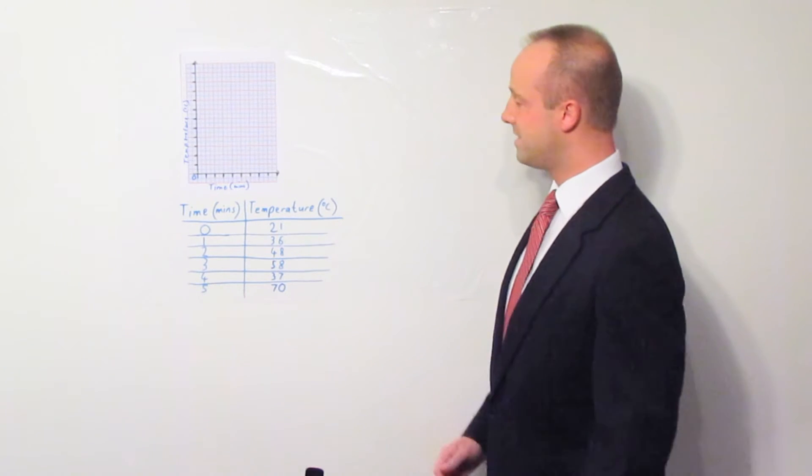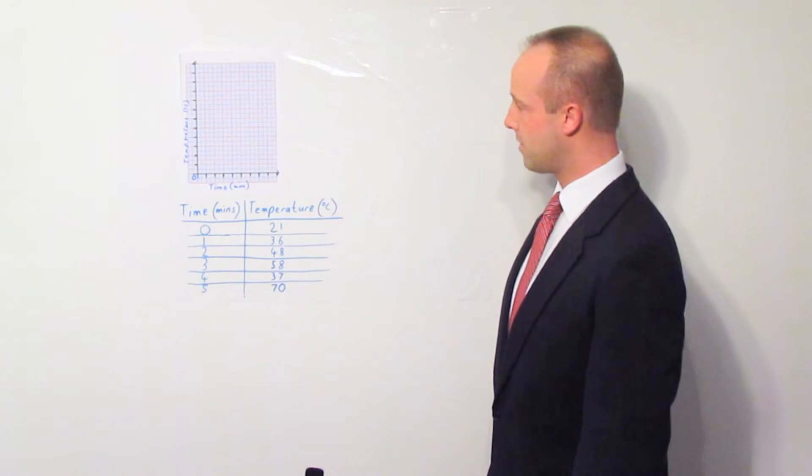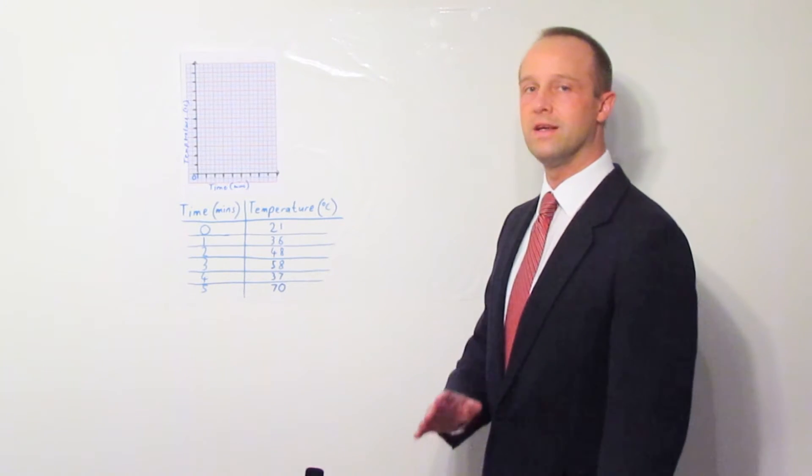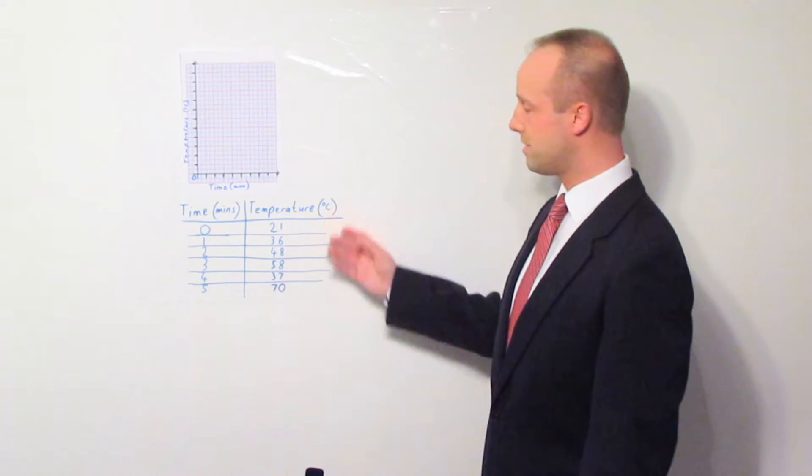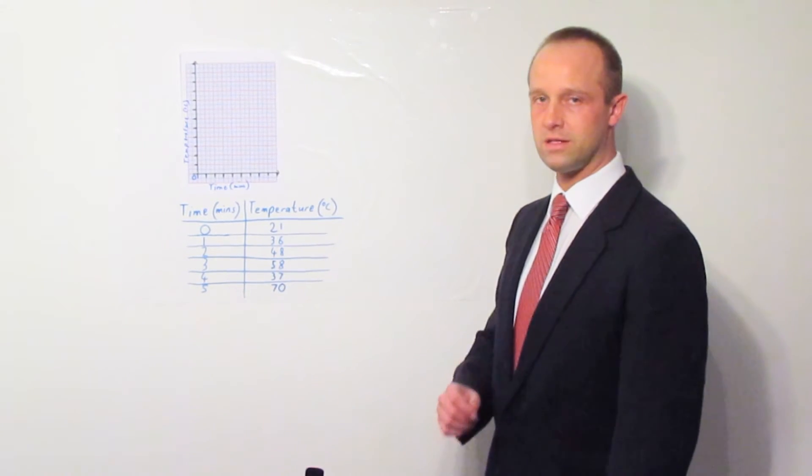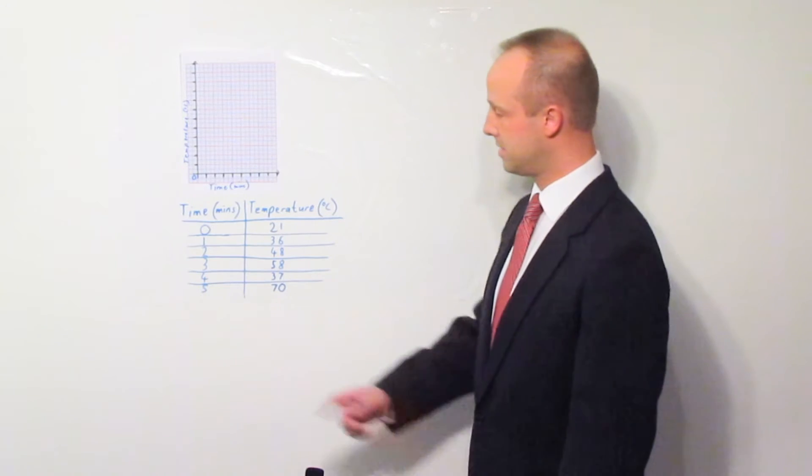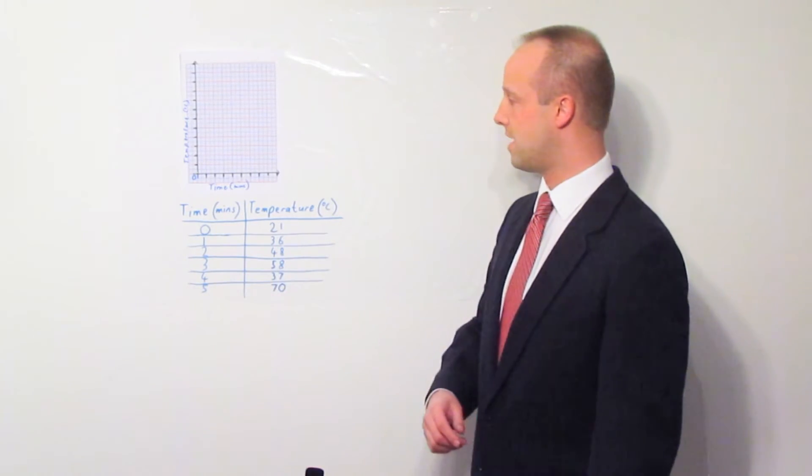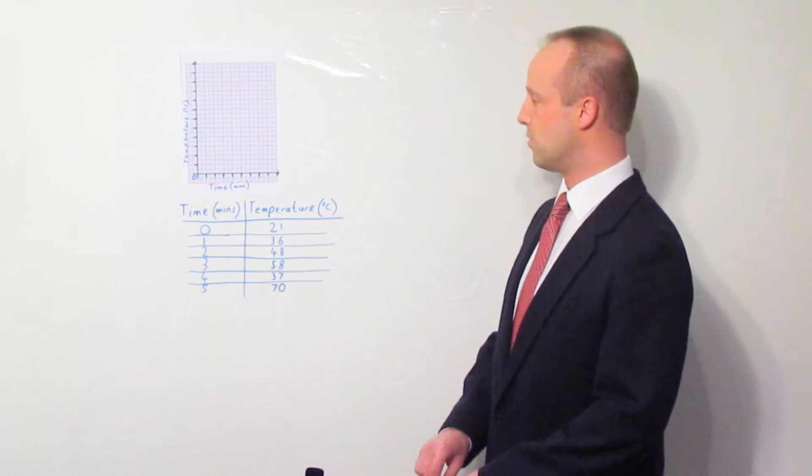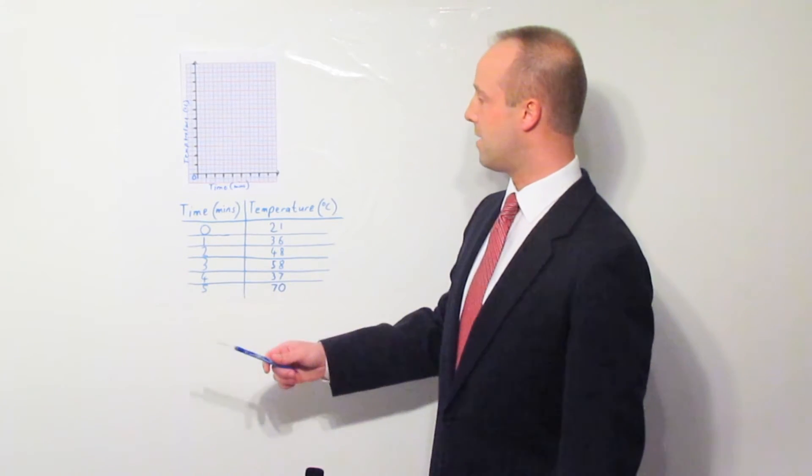So, the last thing we need to do is look at what these numbers are and figure out how we're going to fit them on this scale we've already drawn. And the trick to this is find your biggest number. Don't worry about all these other ones, just find the biggest one. That's the only one you really need to worry about. The biggest one here for time is five. That's normally the bottom one in this column.